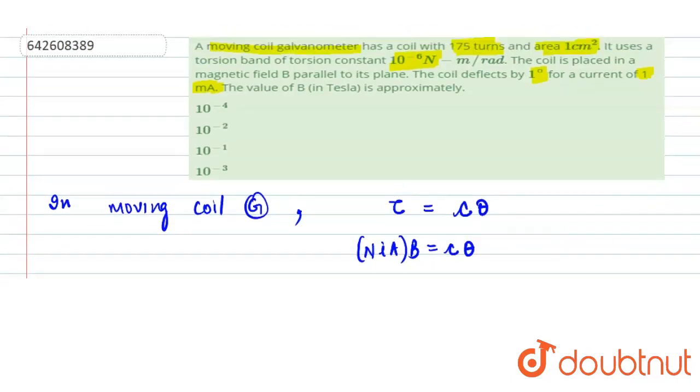So from here, we have to find the value of B. B value would be C theta upon N I A.